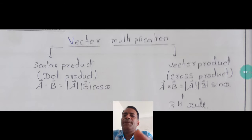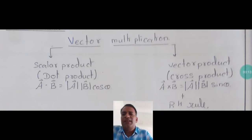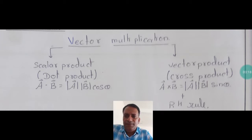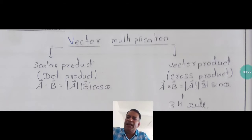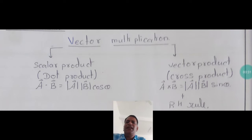Today, we will be learning about vector multiplication. We have already learned how to multiply a vector with a scalar quantity. If vector A is multiplied by a scalar n, the magnitude becomes n times, and when multiplied by a negative scalar, the direction also changes. Now, vector multiplied by vector is of two different types.